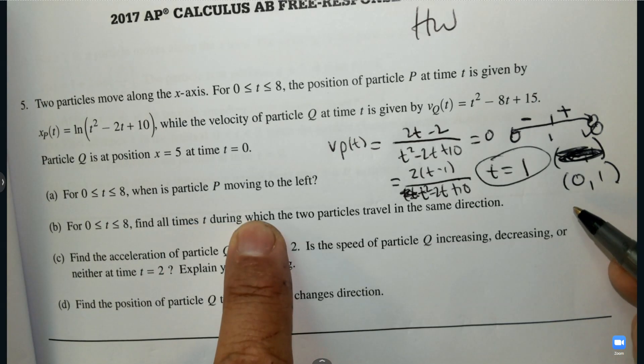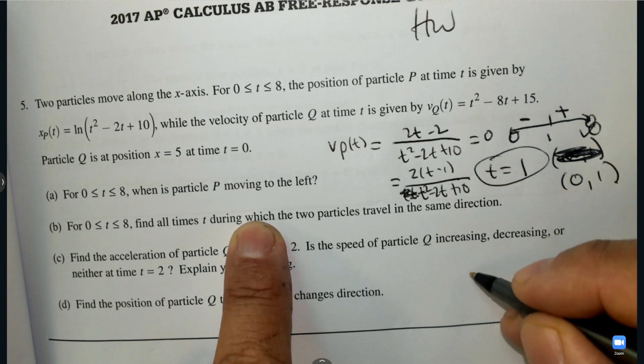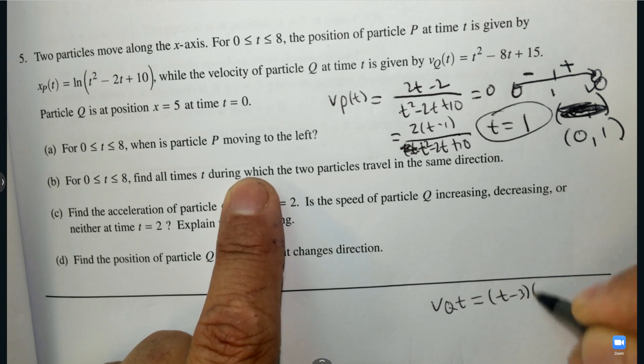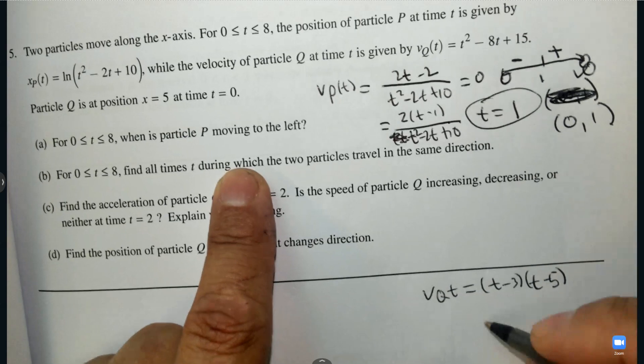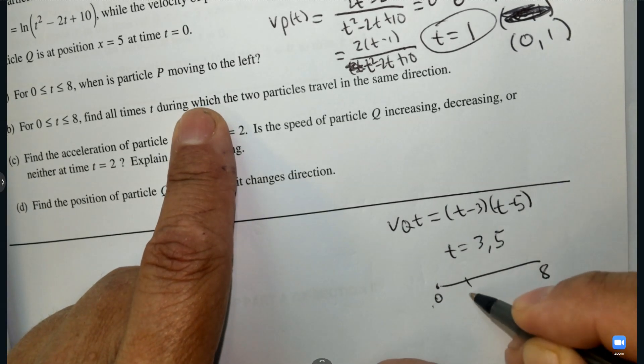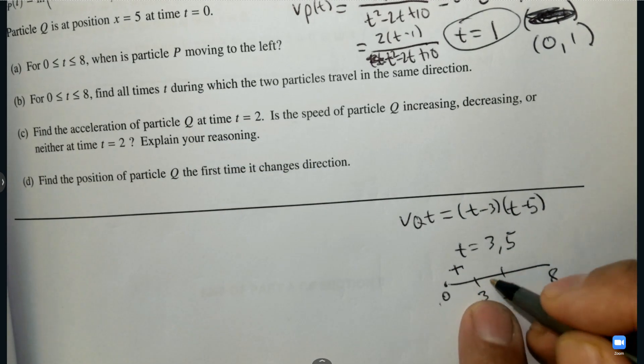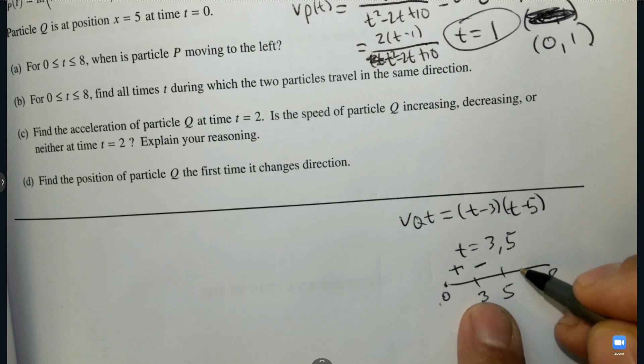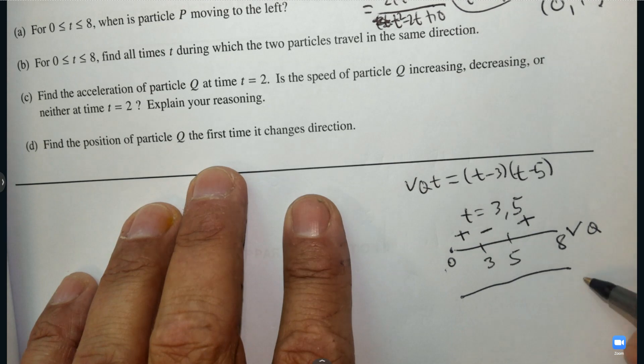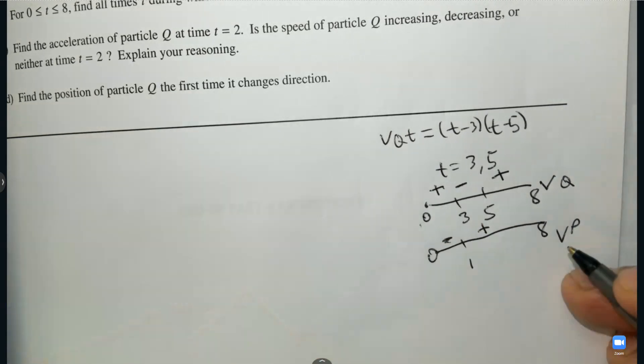From 0 to 8, all times which the two particles travel in the same direction. So I have two equations. So the second particle, I already know the velocity. Let me do that down here. I'm going to factor it right away. This one is factorable. So it's negative 3 and negative 5. They multiply to 15 and add to negative 8. So we have two number lines from 0 to 8. So we have this one from 0 to 8 with 3 and 5. So if I put in positive 1, it's a negative times a negative. If I plug it in 4, it's a positive times a negative. And if I plug in 6, it's a positive times a positive. And then the second number line I just did, so this is the velocity for Q. This is the velocity for P, right?